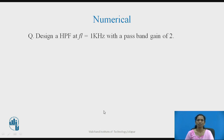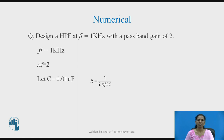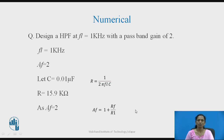Design example: Design a high pass filter for a 1 kHz frequency signal with a pass-band gain of 2. Here f_L = 1 kHz and A_F = 2. Using f_L = 1/(2πRC), assume a capacitor value and calculate R. To achieve a gain of 2, since A_F = 1 + R_F/R_1, you can select R_F = R_1 (equal values in kΩ) to satisfy the pass-band gain requirement.